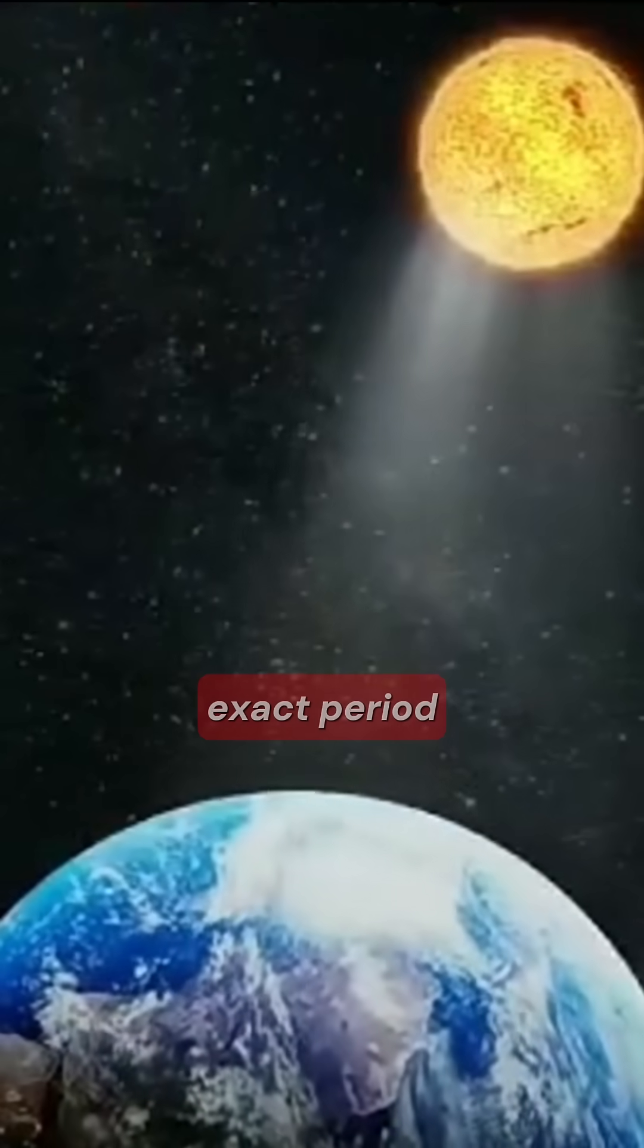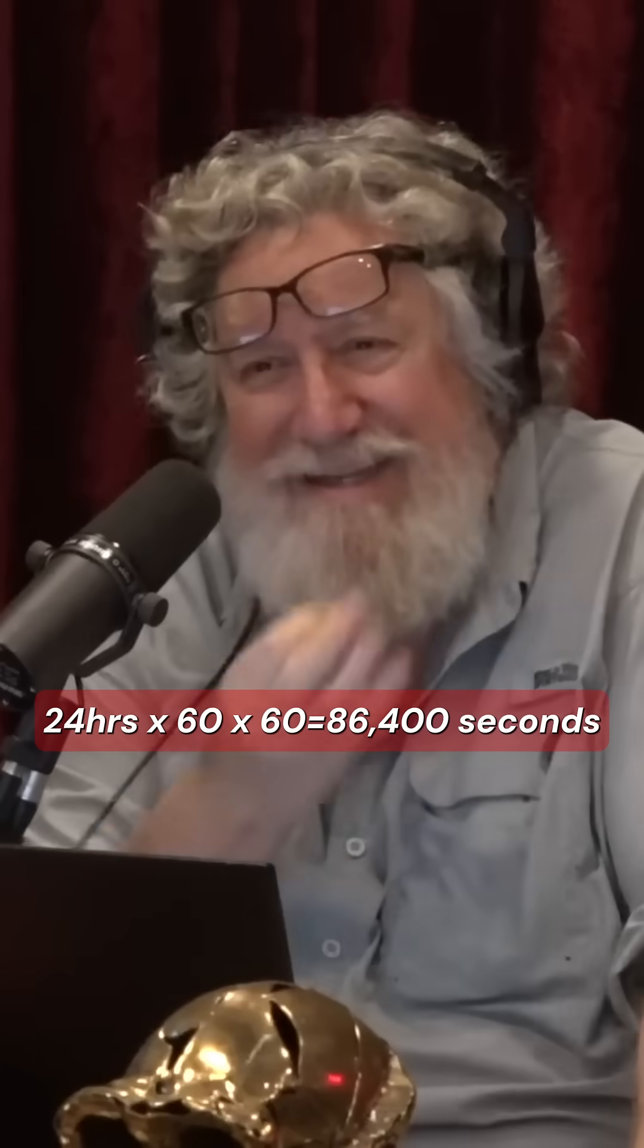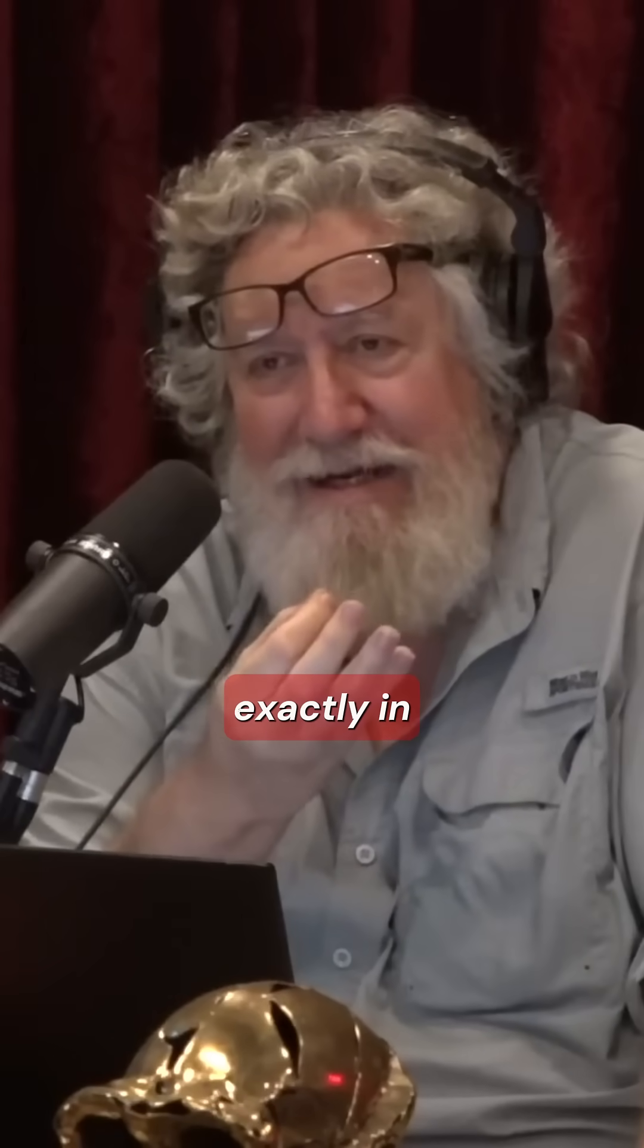24 hours is the exact period of the Earth's rotation with respect to the sun. 24 hours times 60 times 60 means there's 86,400 seconds exactly in that period.